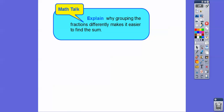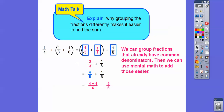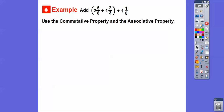Why does grouping the fractions differently make it easier to find the sum? When we regroup the numbers, instead of adding fractions with uncommon denominators first, we add the two that already have common denominators. We can use mental math to add those — one third plus one third gives us two thirds. It would be harder to find common denominators for the first pair first. That's the benefit of the associative property.